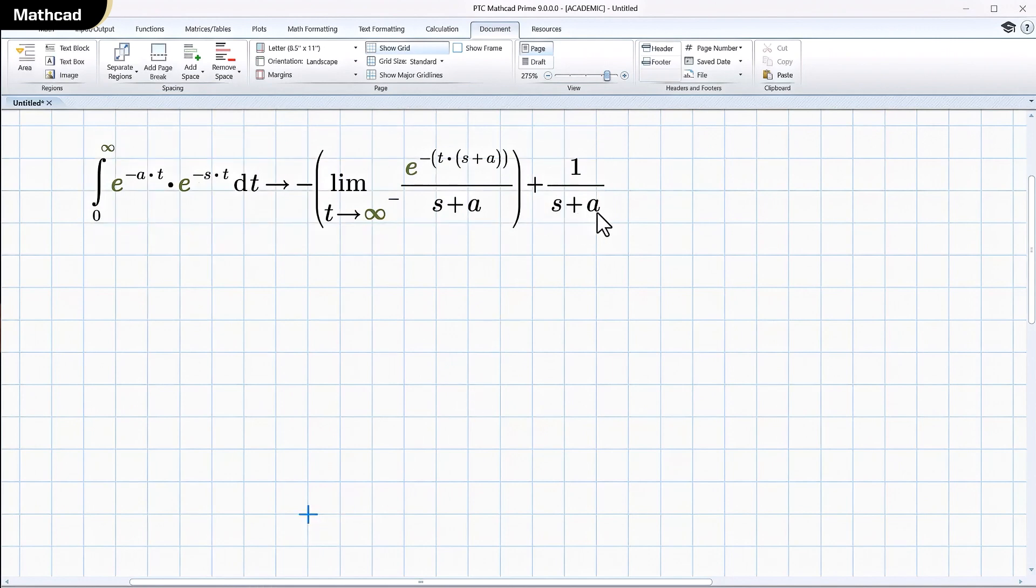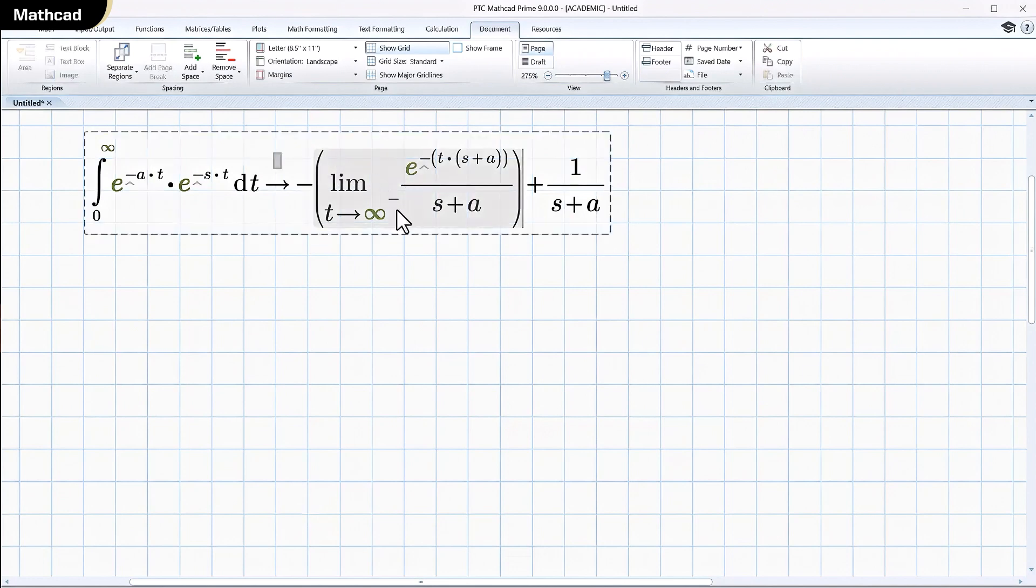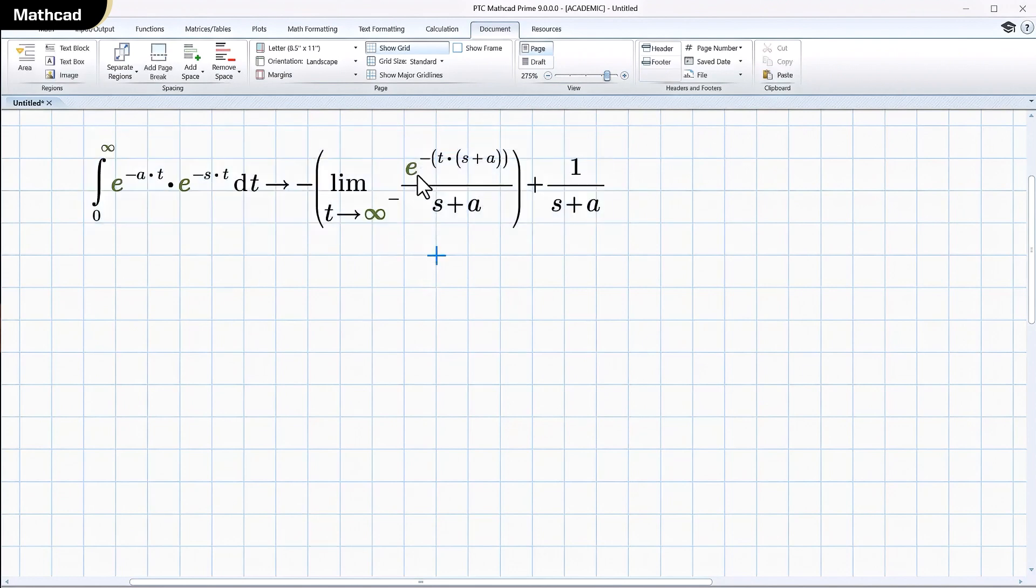Well, there's one over s plus a. I've seen that before. What's all this stuff? The limit as t goes to infinity of e to the minus t times s plus a over s plus a. Okay.